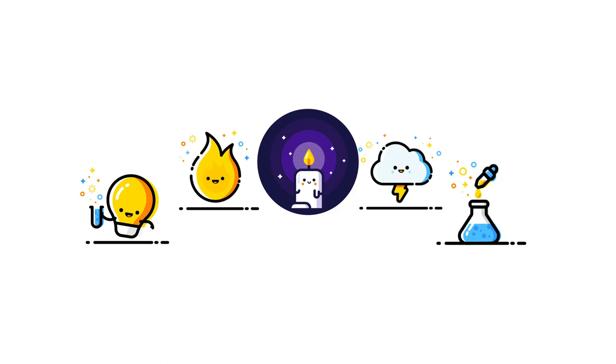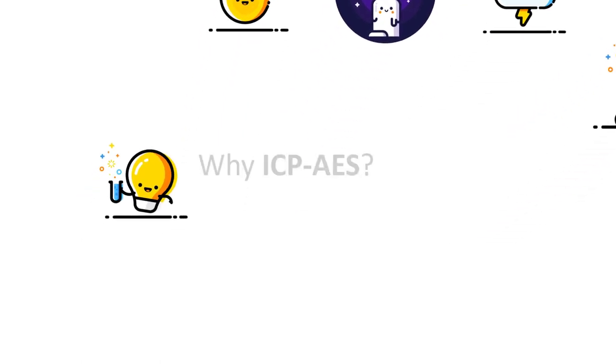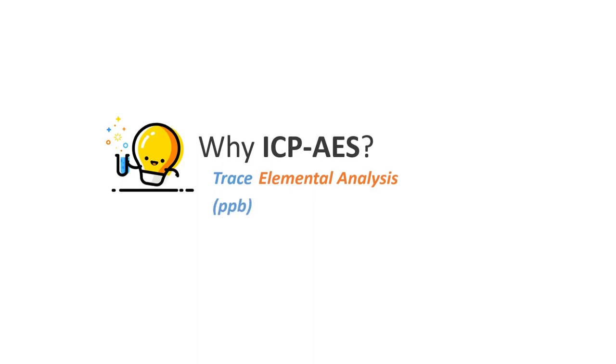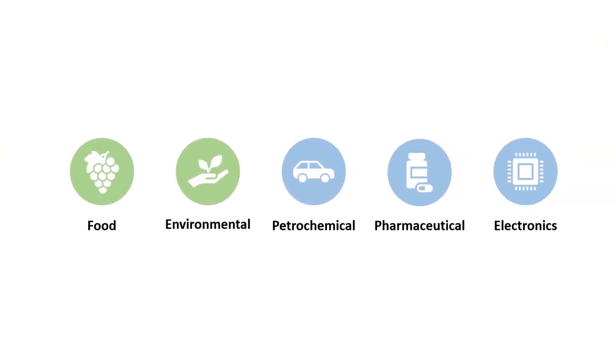Let's have a quick summary on what we have learned so far. First of all, we have learned about why we use ICP-AES, and it's not just for elemental analysis—it's for trace elemental analysis, which allows us to analyze samples with very low concentration in the ppb region. That's why ICP-AES is widely used in these important industries.